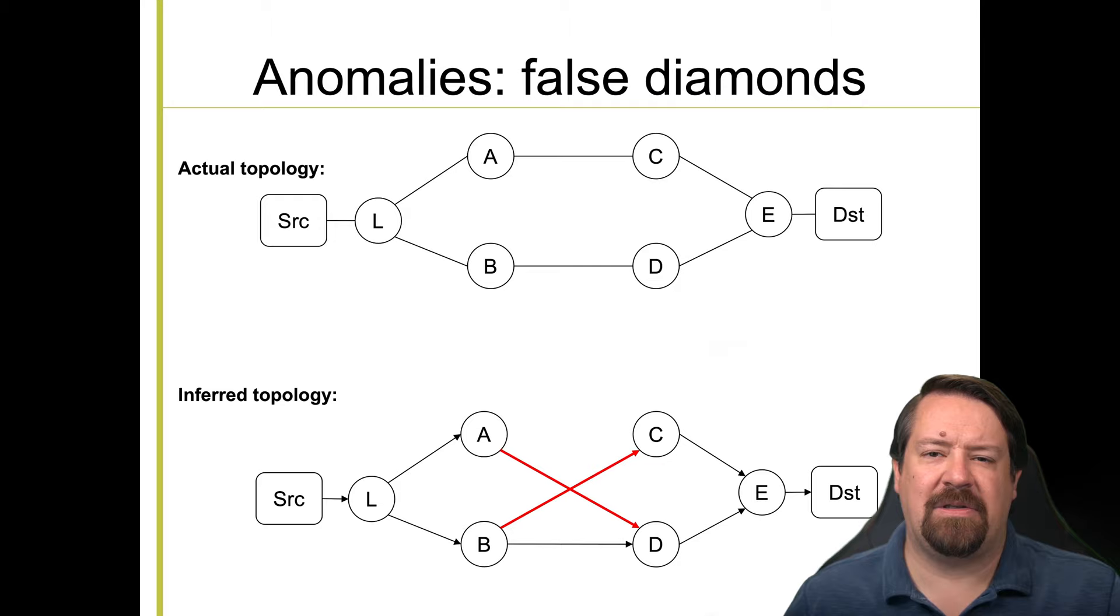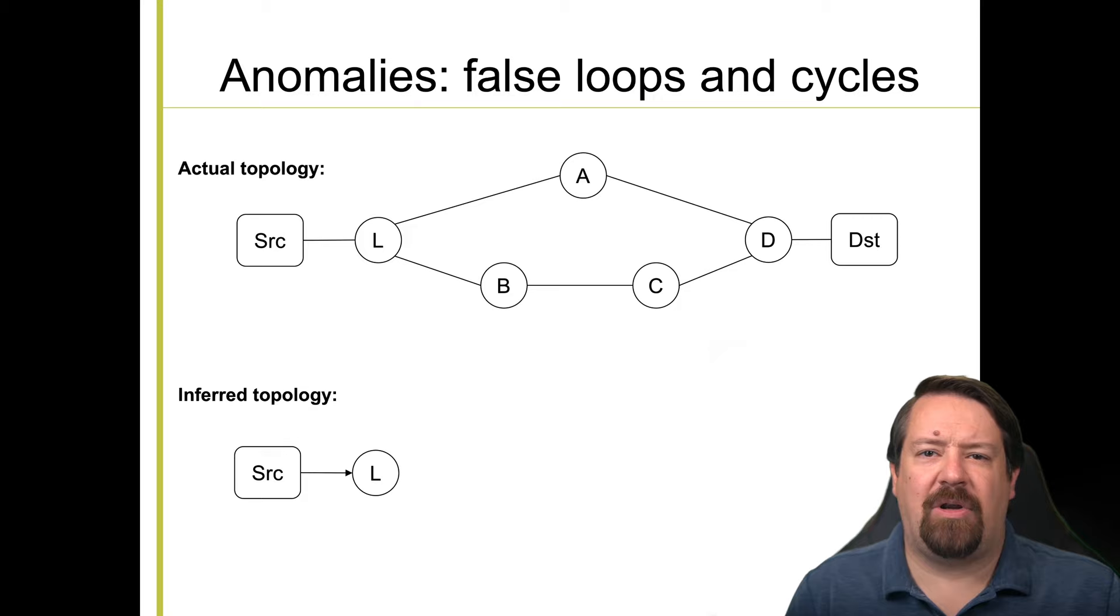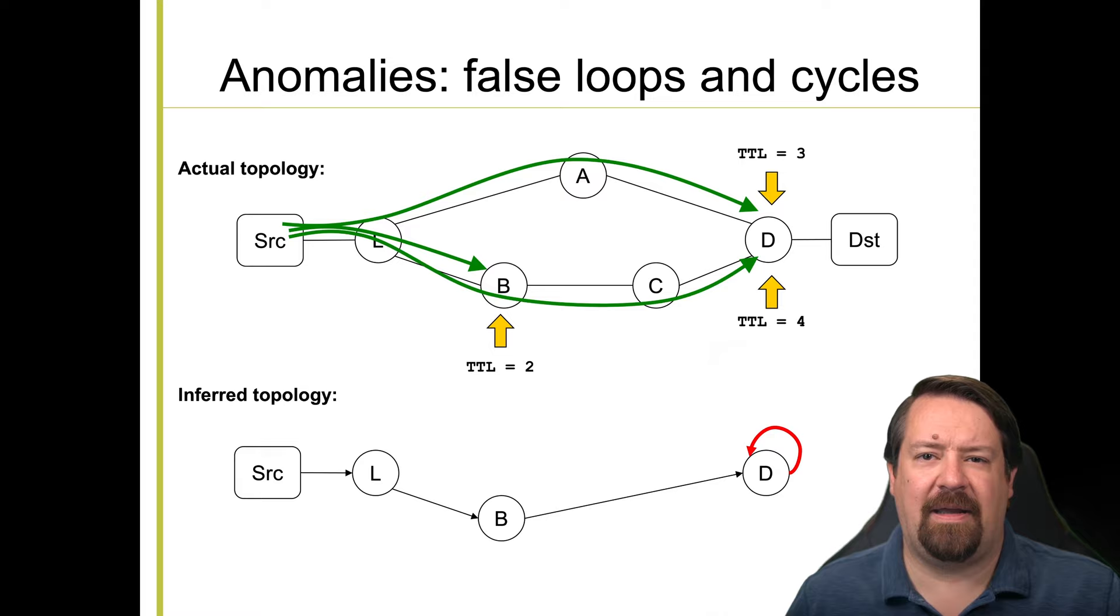To make matters even more complicated, true diamonds do not always consist of equal length paths on both sides of the load balancing. So when we trace right over this, here we have TTL2 expiring at B, TTL3 expiring at D, and now TTL4 also expiring at D because it took a longer path to get there. So now it looks like we have a routing loop where D appears twice in the sequence, and then we reach the destination when we send out TTL5, no matter which route that packet takes. But it can get even worse than this.